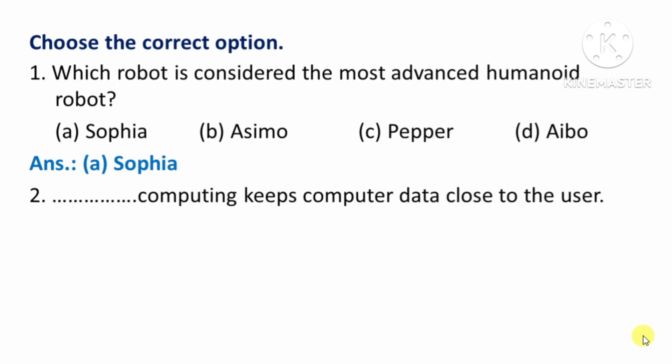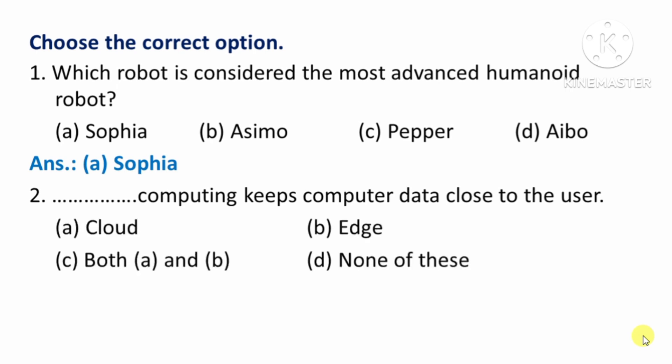Next question: Which computing keeps computer data close to the user? Options: A. Cloud, B. Edge, C. Both A and B, D. None of these.